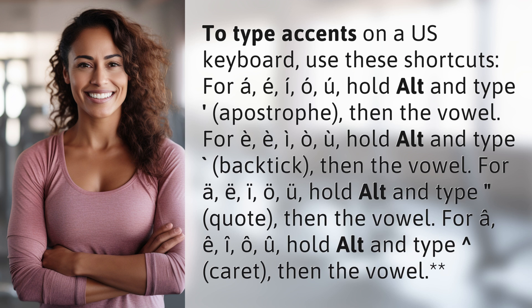For the grave accent over E, I, O, or U, hold Alt and type backtick, then the vowel.